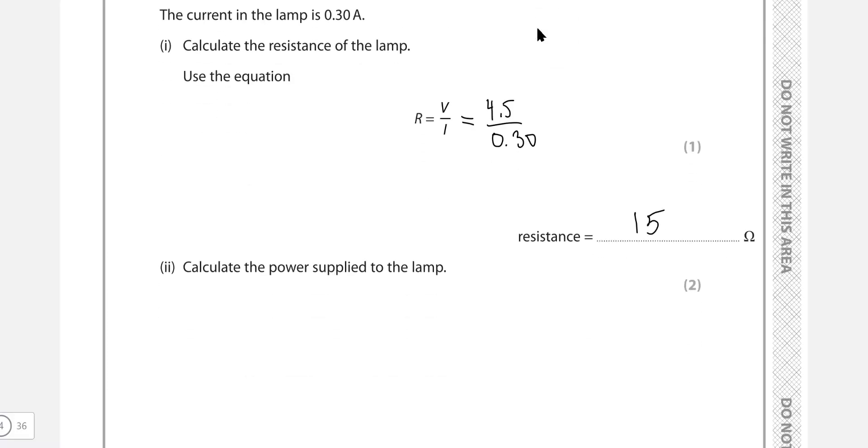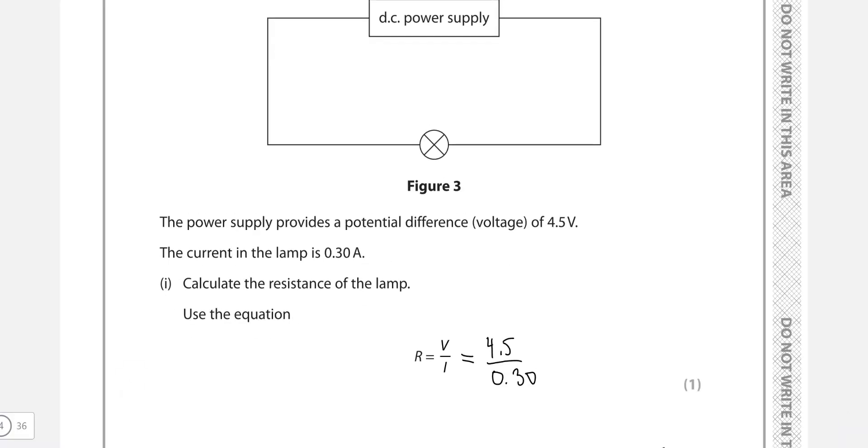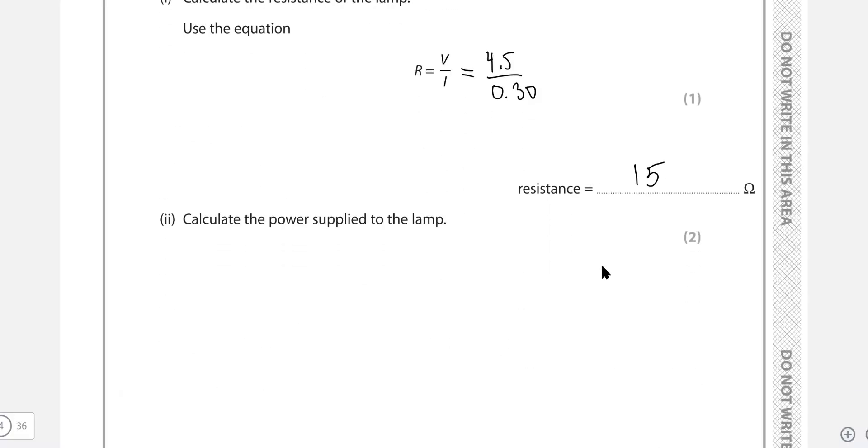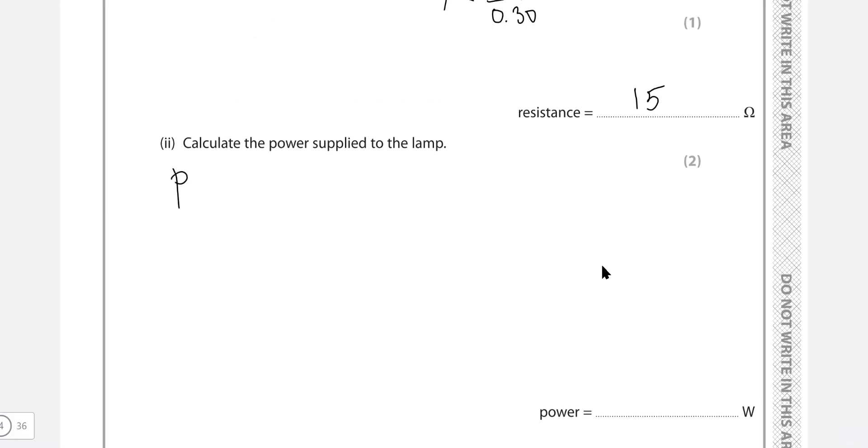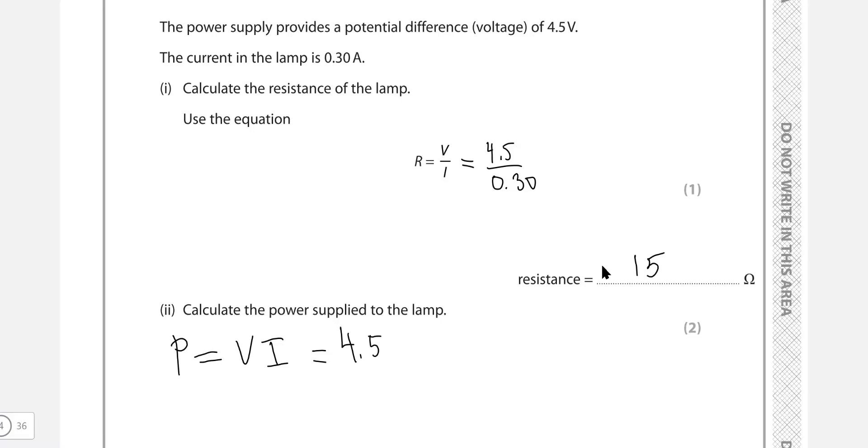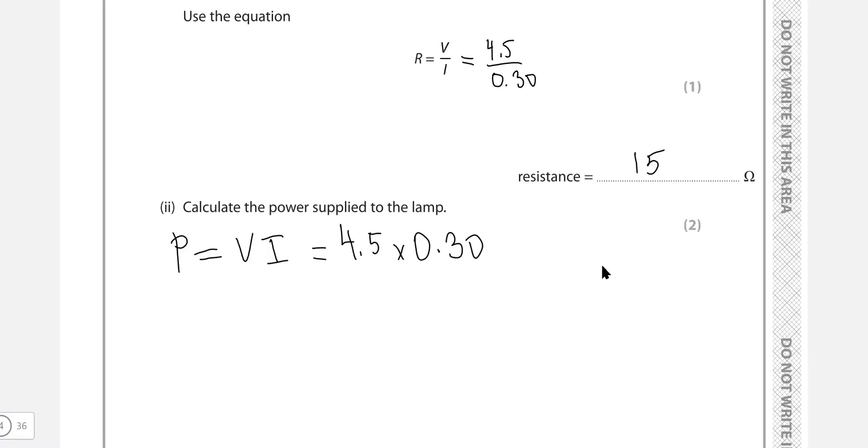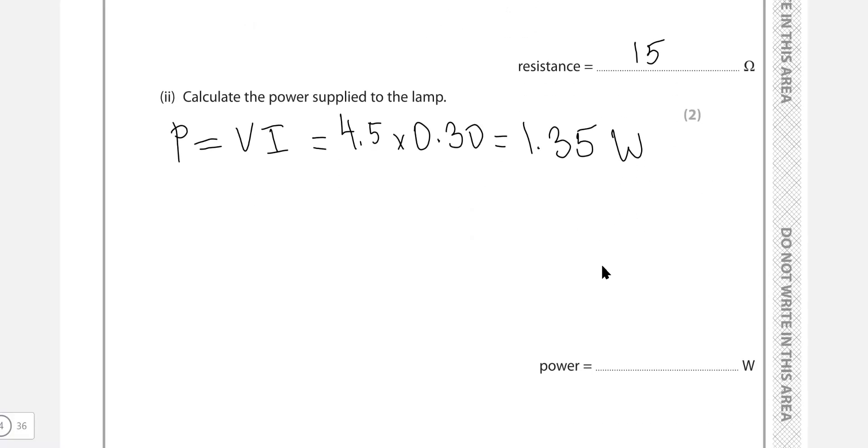Calculate the power that has been supplied to the lamp. Probably the easiest way to calculate the power would be to use the fact that the equation for power is V times I. The voltage was 4.5, the current is 0.30. If we multiply them together, we're going to get 1.35. Because we're using two significant figures, I'm just going to round this up to 1.4 watts.